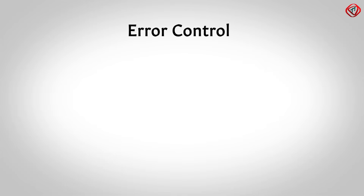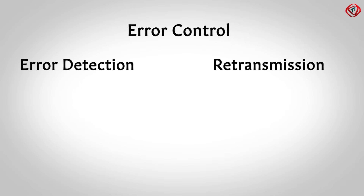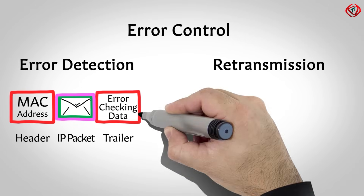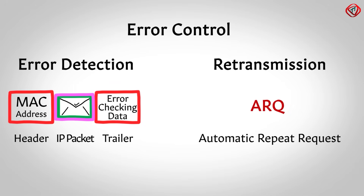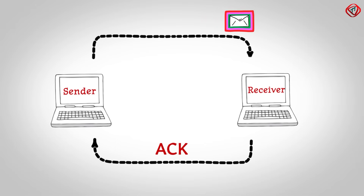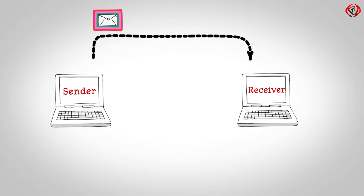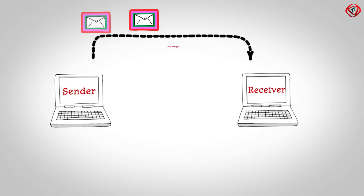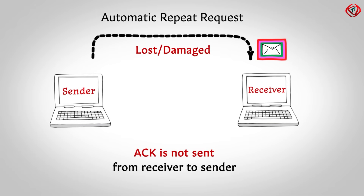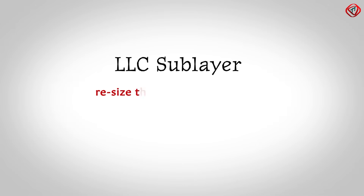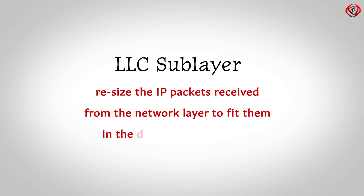Error Control in the data link layer refers to error detection and retransmission. Error detection is done by using the error checking bytes added in the trailer of the frame. The frame retransmission is done using Automatic Repeat Request or ARQ. The receiver sends an acknowledgement to the sender when a frame is received. When the acknowledgement is not received, the sender sends the frame again. So if a frame gets lost or damaged, the acknowledgement is not sent, and as a result the sender sends the frame again. This process is called Automatic Repeat Request or ARQ. The LLC sublayer can also resize the IP packets received from the network layer to fit them in the data link layer frames.